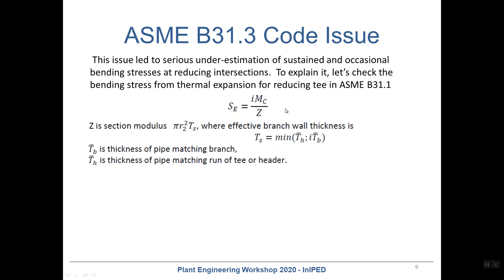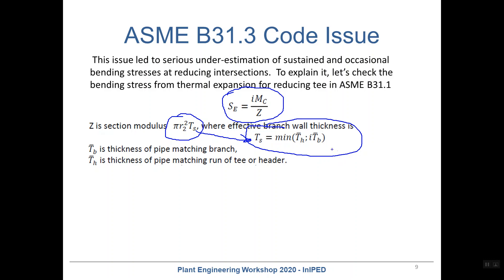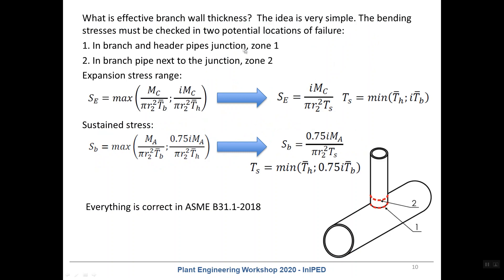Another issue is in ASME B31.3 code. To explain this problem we first need to check the expansion range calculation in ASME B31.1 code. The expansion range stress is due to the bending moment divided by section modulus and multiplied by the stress intensification factor. The section modulus is calculated using an equation that depends on the effective branch wall thickness, which is the minimum value of the wall thickness of the pipe matching the header and the wall thickness of the pipe matching the branch multiplied by the stress intensification factors.